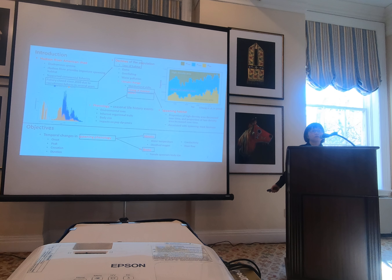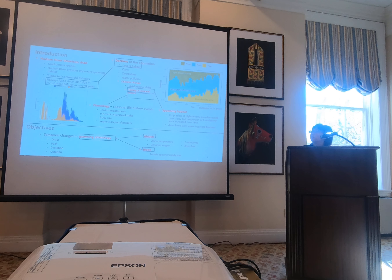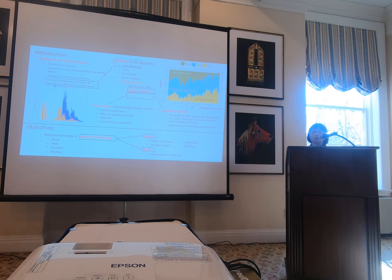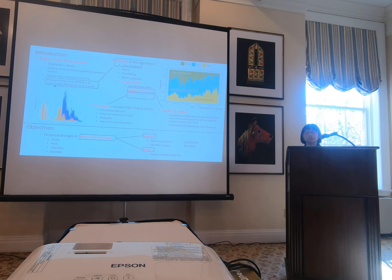The Hudson River American Shad is a diadromous species that migrates between freshwater and marine ecosystems. The Hudson River Estuary provides important spawning habitat for them. The Hudson River American Shad used to support significant commercial fisheries along the east coast of the United States. However, the shad population declined during the 20th century, and the fishery has been closed since 2010, and no sign of recovery has been observed yet.